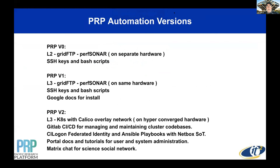I'm going to talk about automation and the evolution of the different versions of the Pacific Research Platform. At PRP v0, we were a strictly layer 2 spaghetti monster that we knitted ourselves. It was very simple — we had a physical box for Grid FTP, a physical box for perfSONAR. We exchanged SSH keys and bash scripts, and that was the state of automation.